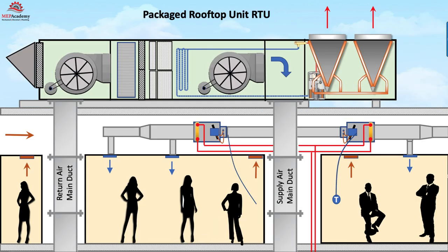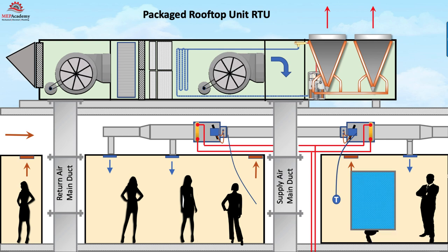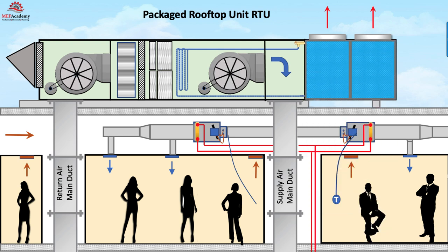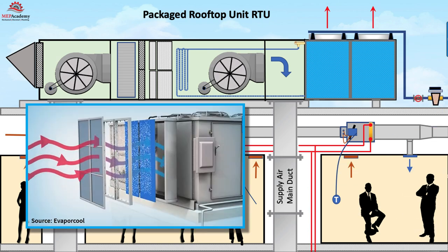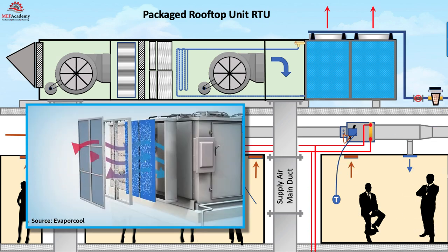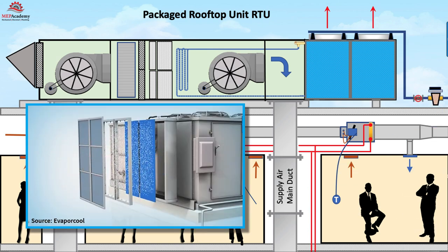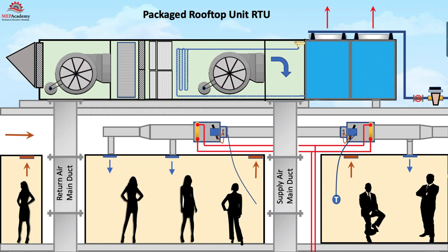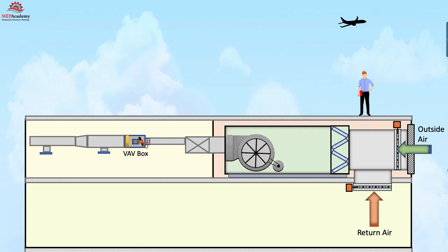Packaged air conditioners and indirect evaporative cooling. This is another method of using indirect evaporative cooling to pre-cool air before it enters the condenser coil of a packaged DX unit. This also allows for increased efficiency.